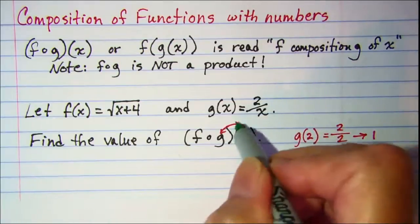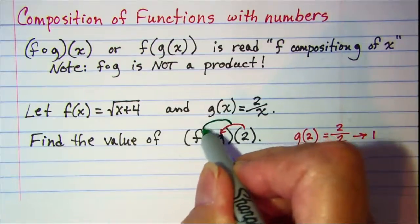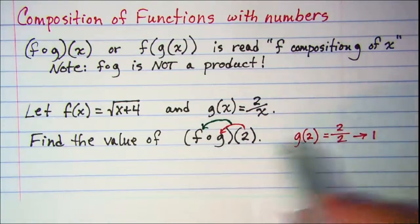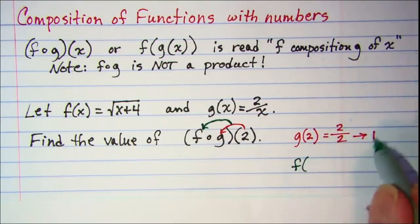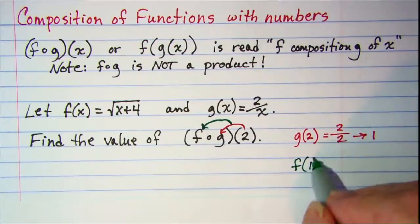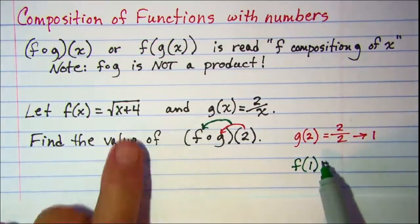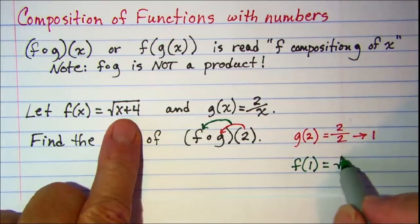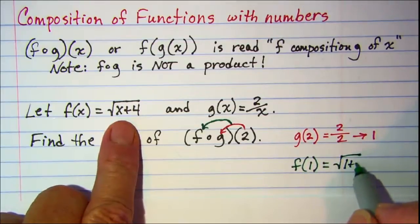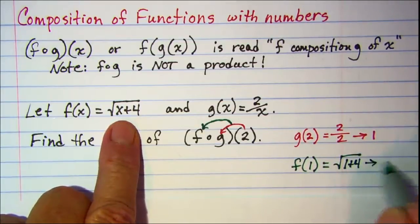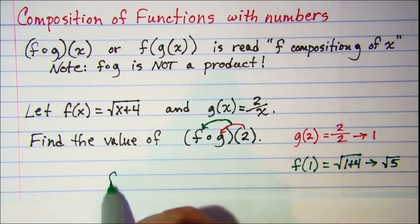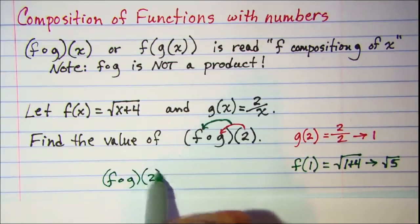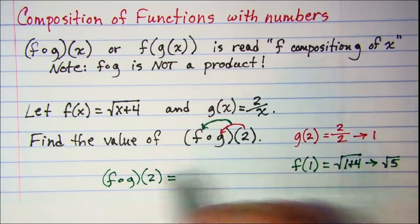Then that value we're going to sub into our f function, so we want to calculate f(1). f(1) then is the square root of 1 plus 4, which is square root of 5. So our answer, f∘g(2), is equal to √5.